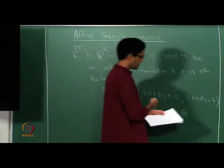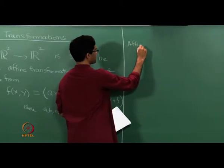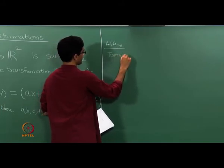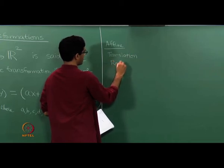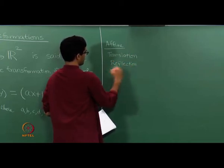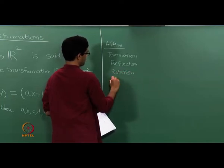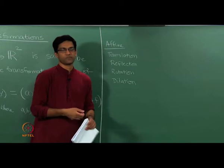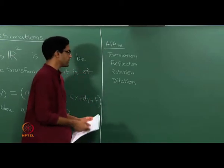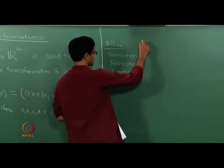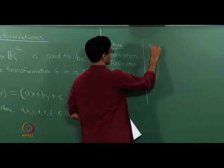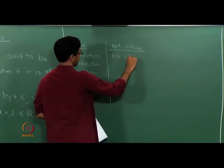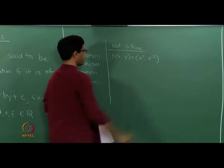We have actually seen several examples of affine transformations. We looked at maps which were translations, reflections, rotations, dilations — homogeneous or inhomogeneous dilations — and also a few other examples like f of (x, y) going to (x+y, x-y). All of them are examples of affine transformations. Examples of things which are not affine transformations include what we looked at at the end of the last lecture.